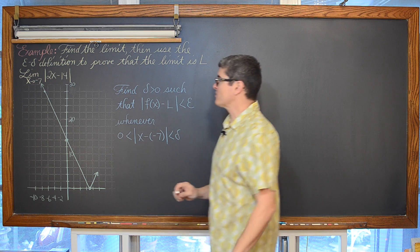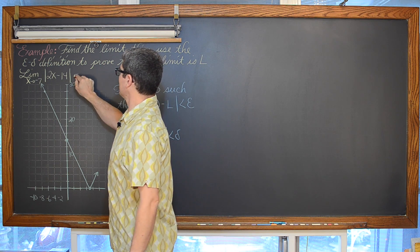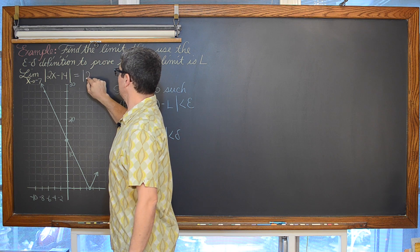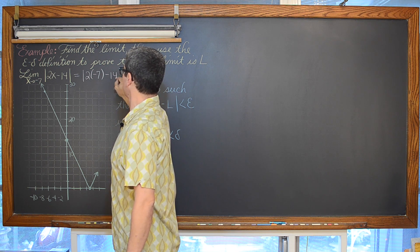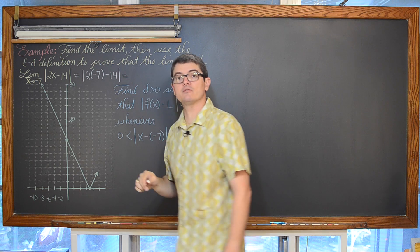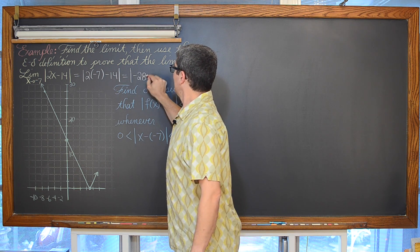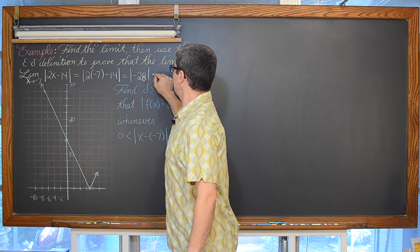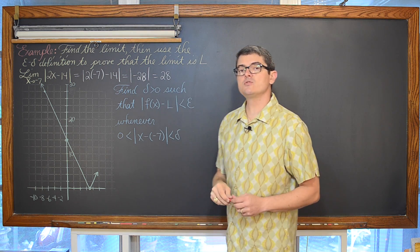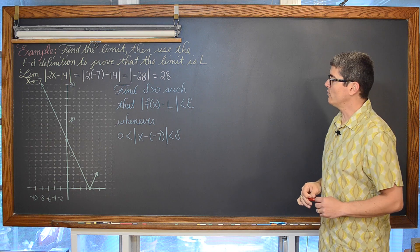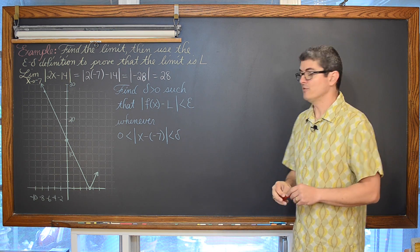We are going to let x approach negative 7. That means we are looking at the absolute value of 2 times negative 7 minus 14, which is going to be the absolute value of negative 28, which of course equals 28, because the absolute value function tells you how far a number is from zero on the number line.